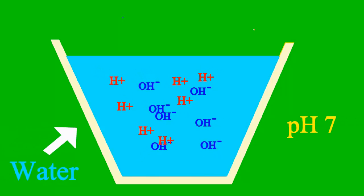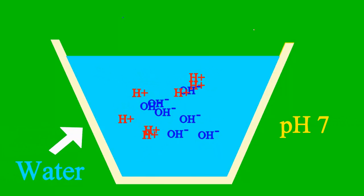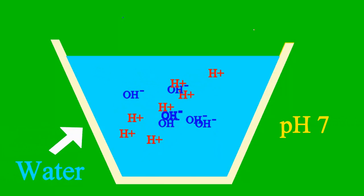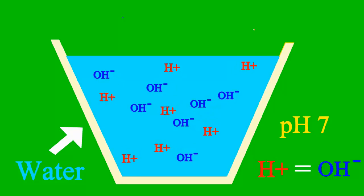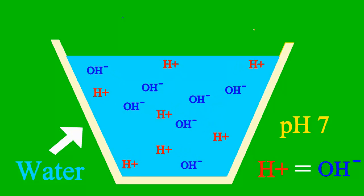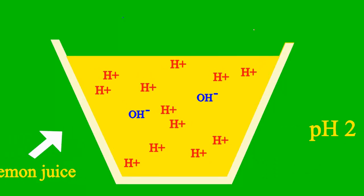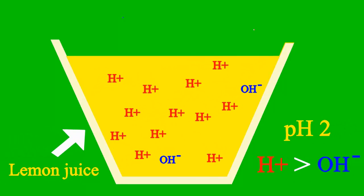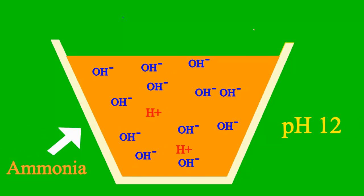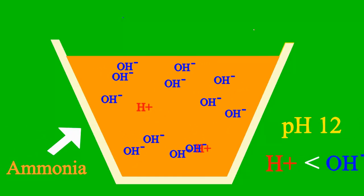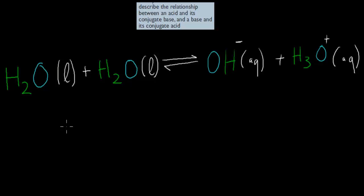When the pH is 7, it's a case where the sample is neither an acid nor a base. But less than 7 we say it's an acid, more than 7 it's a base. In this video, we're going to talk about conjugate bases and conjugate acids — words you should be quite familiar with by the end.